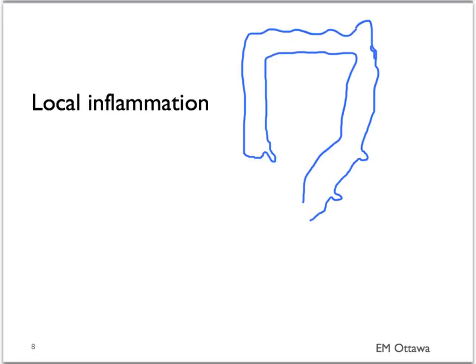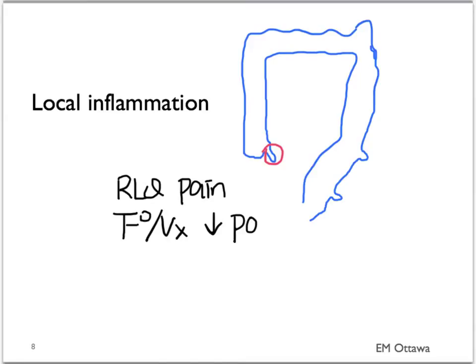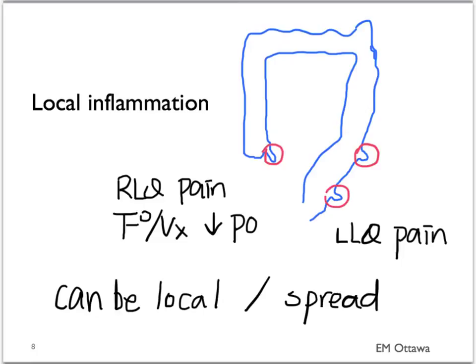For patients with local inflammation, in appendicitis leading to a perforation, the classic signs would be periumbilical pain that radiates to the right lower quadrant, with fever, vomiting, and anorexia. In patients with diverticulitis, their initial presentation might start in the left lower quadrant. With both of these, the perforation might be contained in that area or become generalized, which will affect how the patient presents and how sick they look.